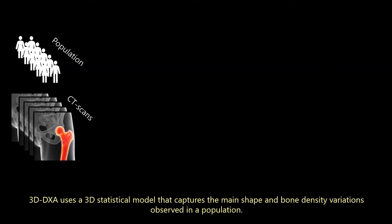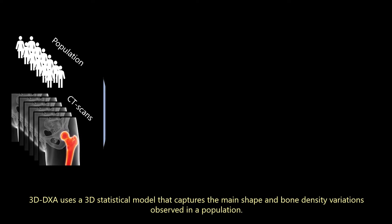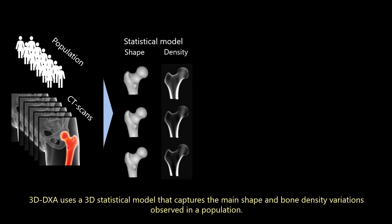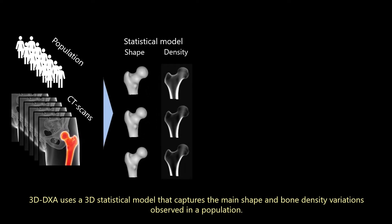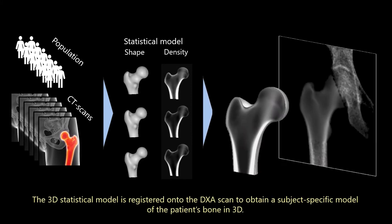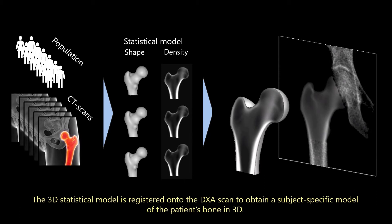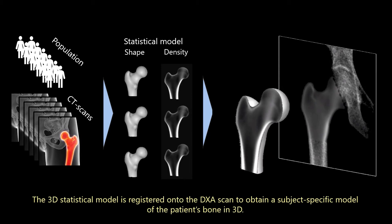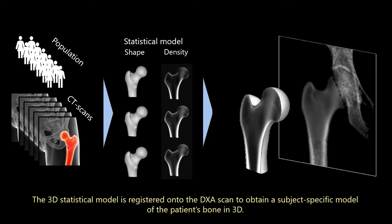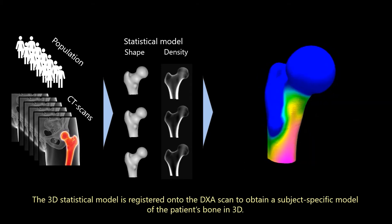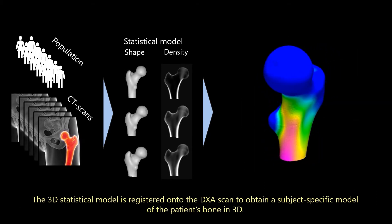3D DEXA uses a 3D statistical model that captures the main shape and bone density variations observed in a population. The 3D statistical model is registered onto the DEXA scan to obtain a subject-specific model of the patient's bone in 3D.